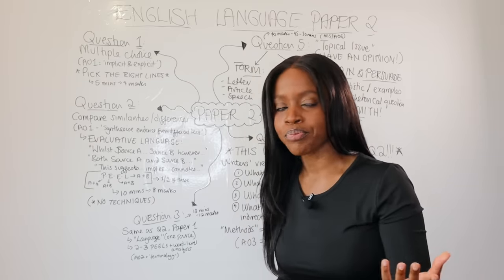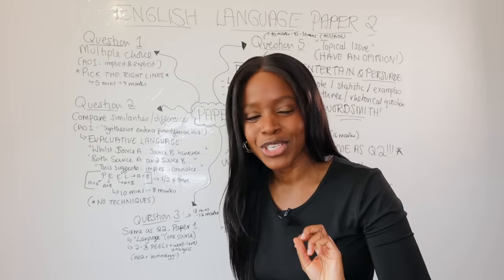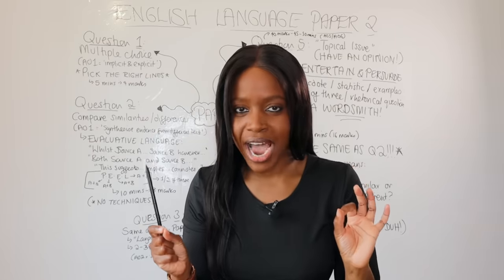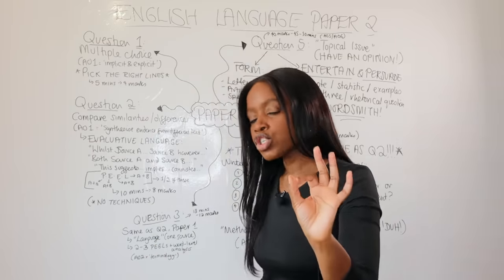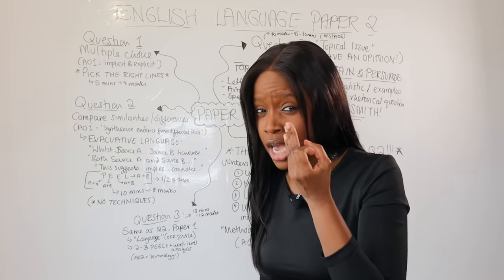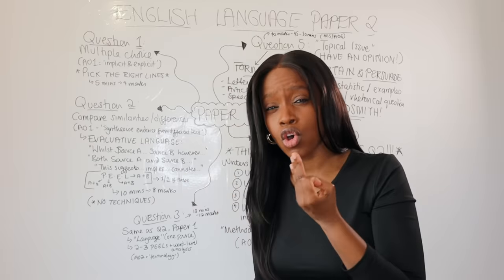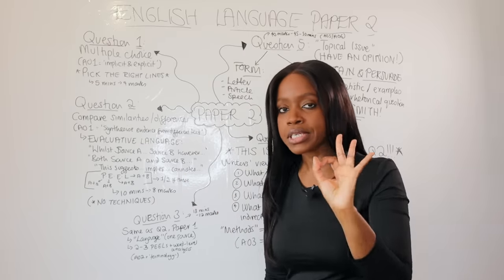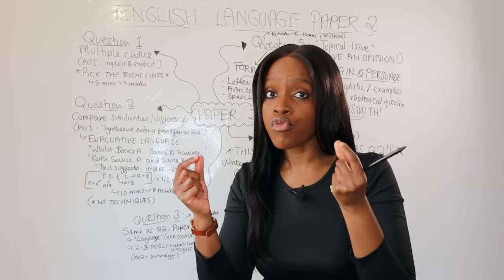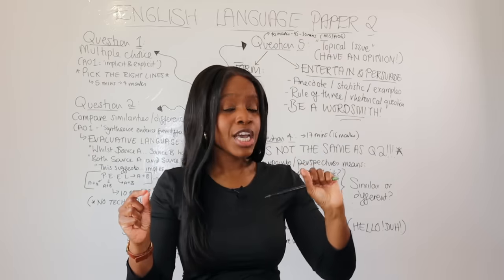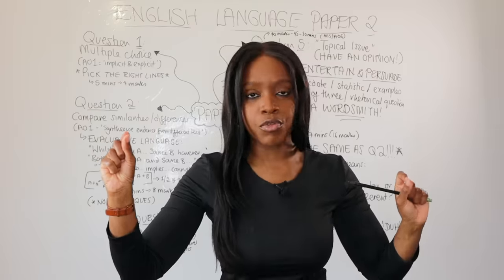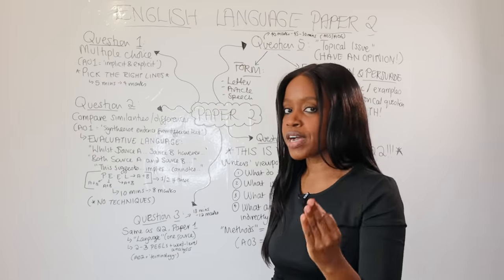Examiners just want to see you're able to pick out the right information from the right line numbers, pick the four statements that are true, and move on. Then question two — this is your first comparison question. Pay attention to how this question is going to be very distinct from question four. You cannot recycle the same points in question two as in question four.